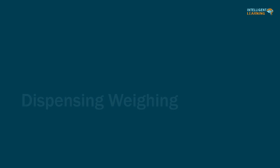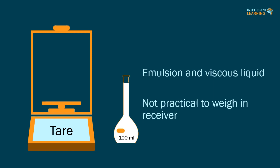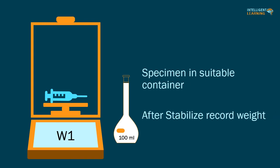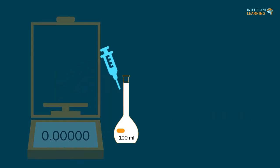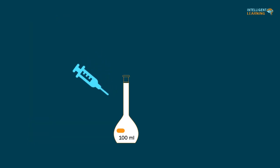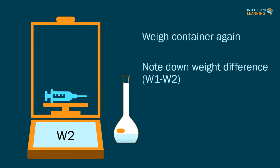Dispensing weighing is typically used for weighing emulsions or viscous liquids such as ointments. In these situations it is not practical to weigh the material into a typical receiver. The analyst should tare the balance, then place the sample on the balance in a suitable container — for example, a bottle, tube, transfer pipette, or syringe — that has been wiped clean on the outside. Record the weight after the balance display stabilizes. Transfer the desired amount of sample to an appropriate receiving vessel, such as a volumetric flask. Place the pipette or syringe back onto the balance. The difference in the two weighings is equal to the weight of the transferred specimen.